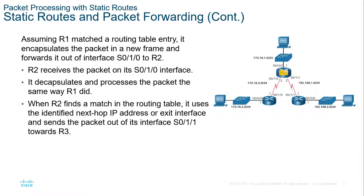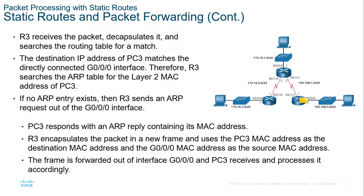Assuming Router 1 matches the routing table entry, it will forward traffic out to the next hop or out the exit interface, depending on how it is configured. Router 2 will accept it and process it following the same three guidelines: is it in the routing table? Is there a static route? If not, drop. If Router 2 has a default route forwarding network traffic to R3, it may send an ARP request to verify the MAC address of the next hop.